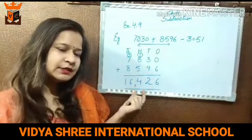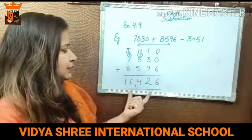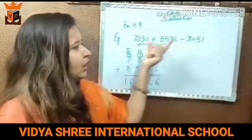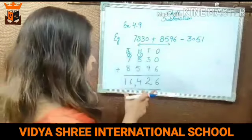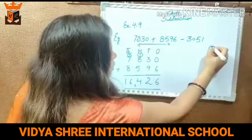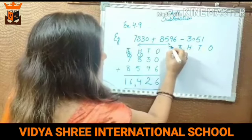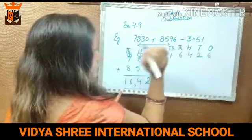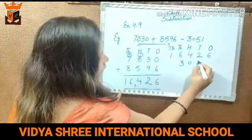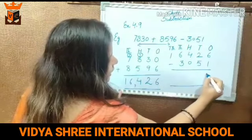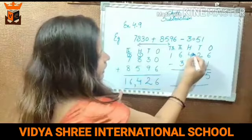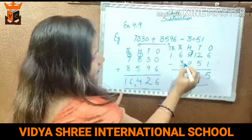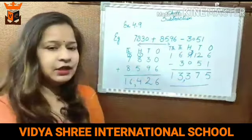When we add the two numbers, we get 16,426. Now what we have to do next — ab hume is sum me se last number minus karna hai. Kyonki addition ke baad subtraction ka sign hai. So we subtract 3051 from 16,426. Here we have 5 digits, so we write 5 place values: ones, tens, hundreds, thousands, and ten-thousands. 16426 minus 3051. 6 minus 1 is 5. 2 minus 5 — not possible, so borrow — 12 minus 5 is 7. Then 3 minus 0 is 3. 6 minus 3 is 3, and 1 remains. Answer is 13,375.